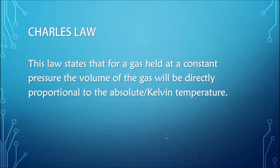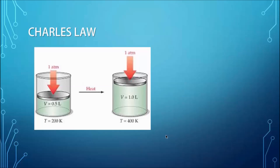The next law we'll explore is Charles's Law, which states that for a gas held at a constant pressure, the volume of the gas is directly proportional to the absolute, or Kelvin, temperature. For example, if a gas is at a pressure of one atmosphere and we apply heat, the volume will increase. Increasing the temperature from 200 Kelvin to 400 Kelvin — a factor of two — we expect the volume to also increase by a factor of two.